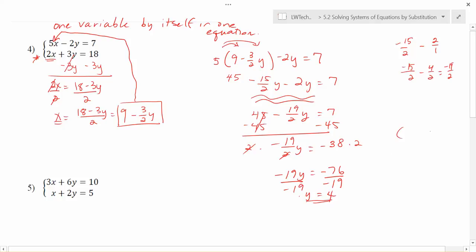My final answer should be written as an ordered pair. So I found the y coordinate. I still need to find the x coordinate. I'm going to take the value for y that I just found and plug it back into any equation. I'm just going to go ahead and use this x equals 9 minus 3 halves y that I was using before. That'll be 4 over 1. We can reduce a little bit. This gives me 9 minus 6, which is 3. So I end up with x equals 3, y equals 4, and I found a solution to the system of equations.